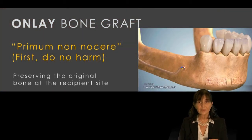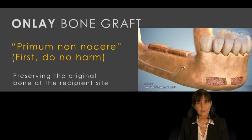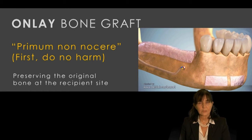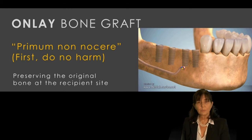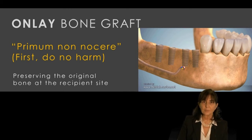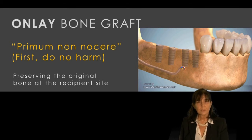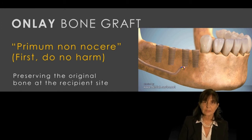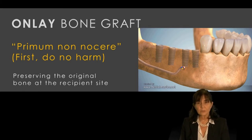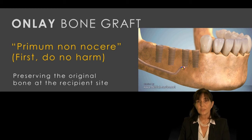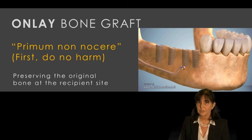Onlay bone grafting involves harvesting bone from one intraoral area — preferably the mandible, either the symphysis, ramus, or retromolar area — and building up the recipient site step by step. The donor site provides either monocortical bone from the ramus, or corticocancellous monocortical bone with cancellous component from the symphysis.